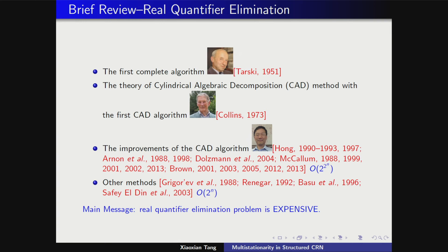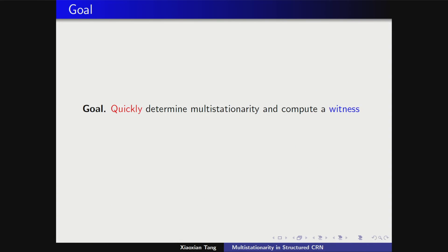The best method known still has exponential complexity. So even though in theory we can solve the multi-stationarity problem by quantifier elimination, it is not practical for chemical reaction networks. The goal of this talk is to quickly determine multi-stationarity and compute a witness — a kappa and C such that the network has multi-stationarity — for structured networks, since we cannot do this for a general network.